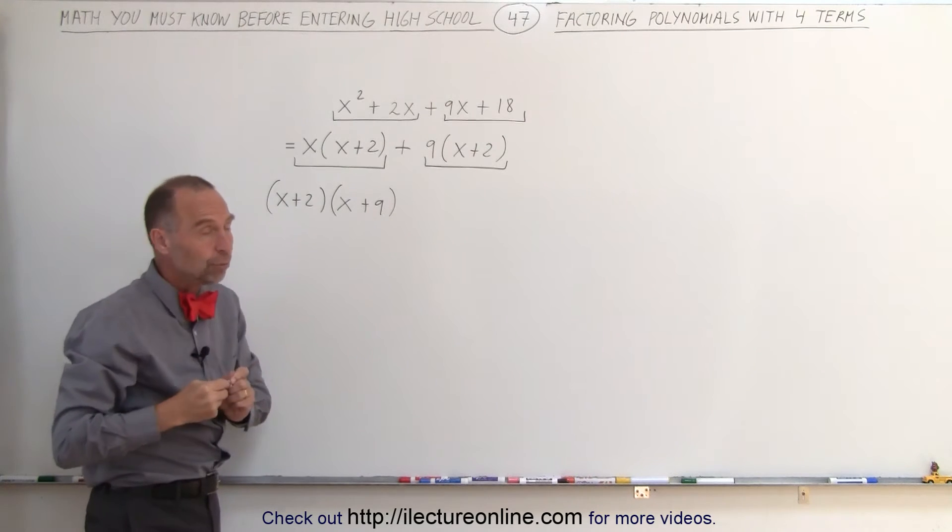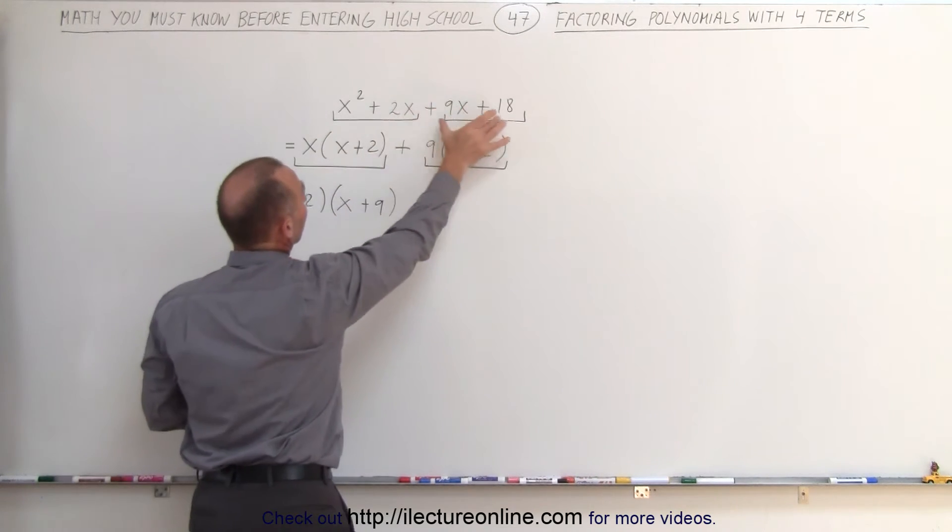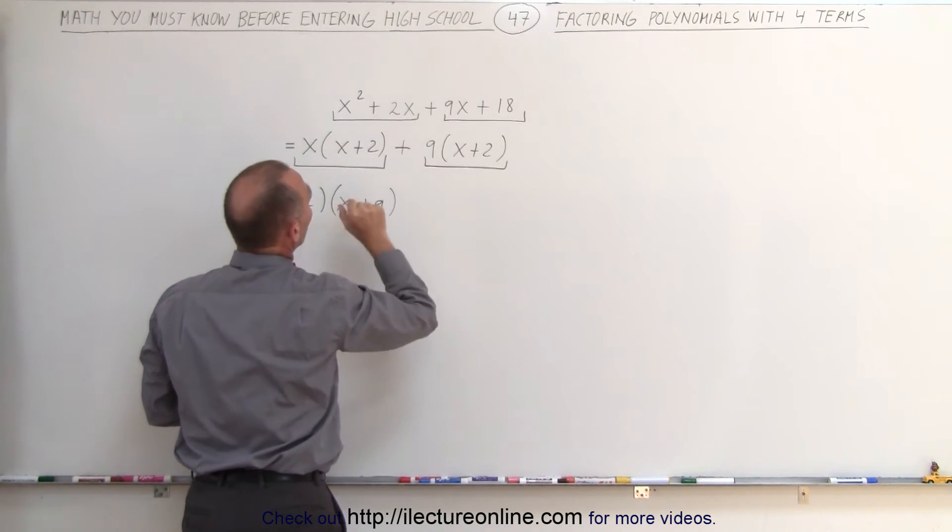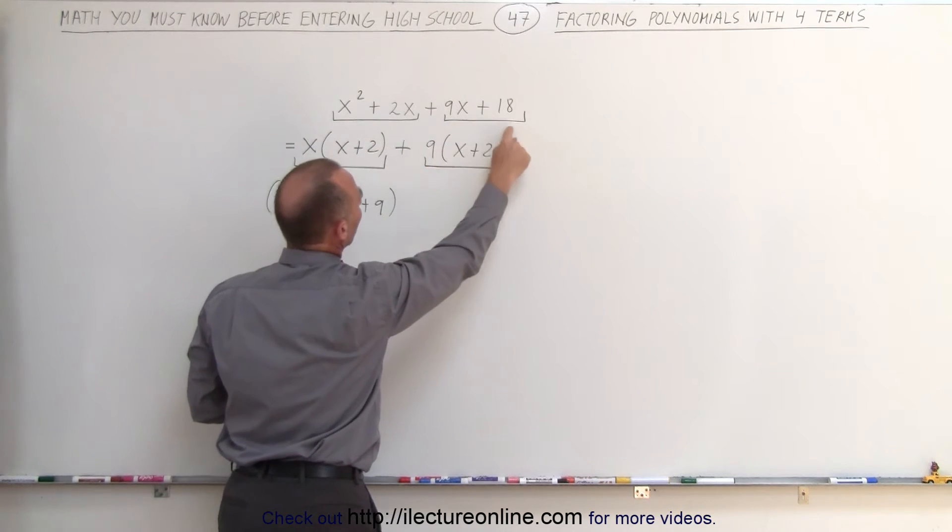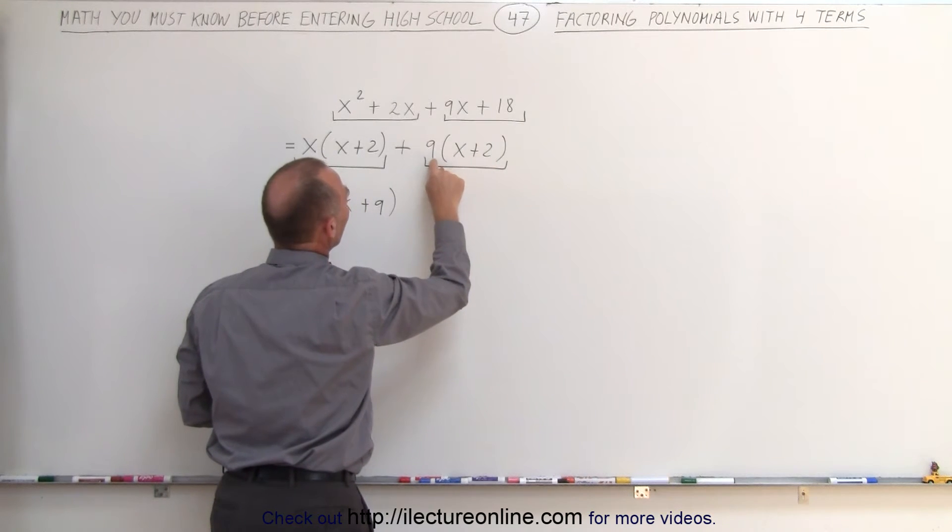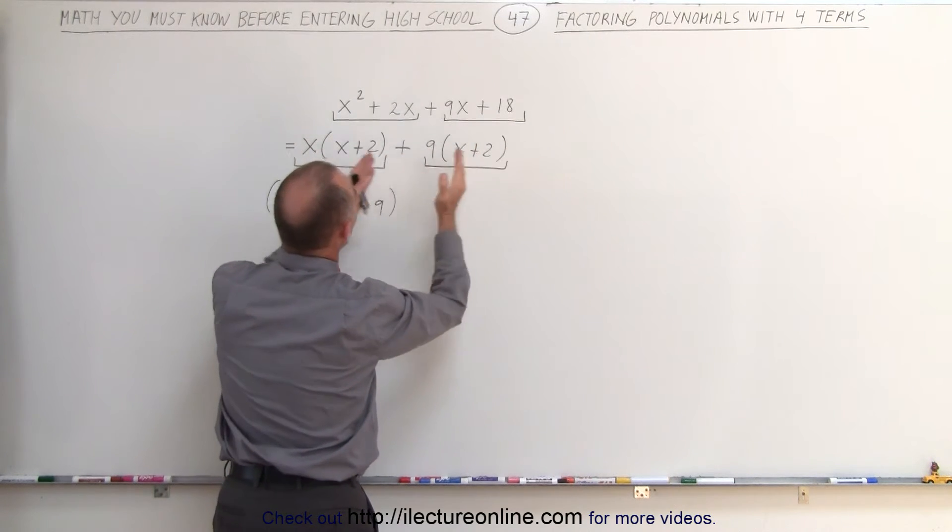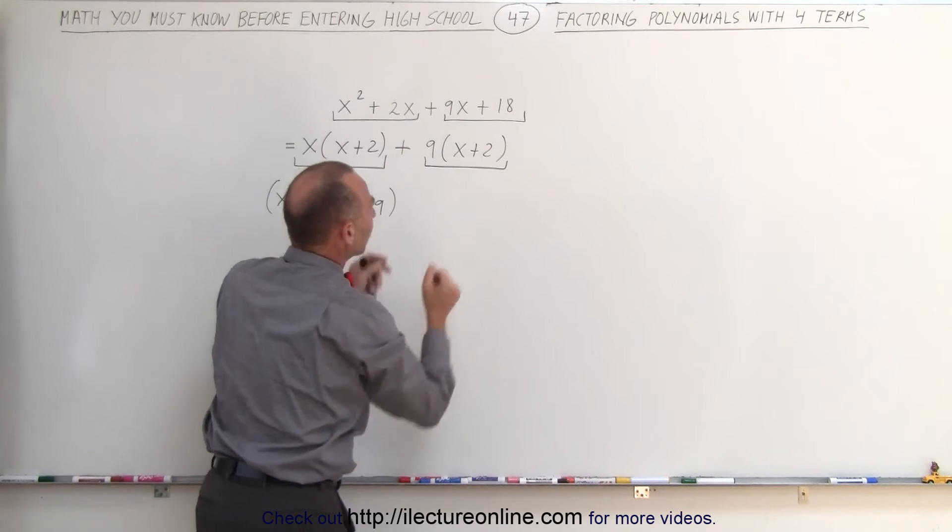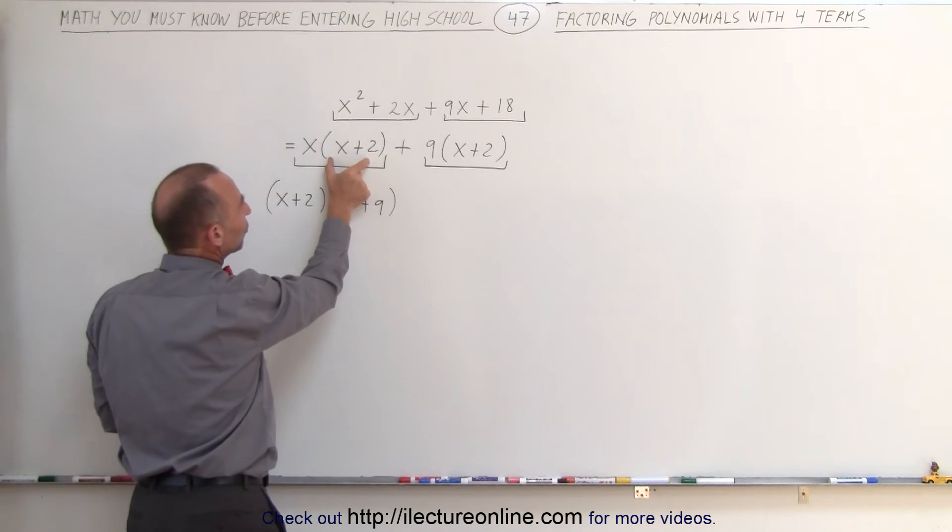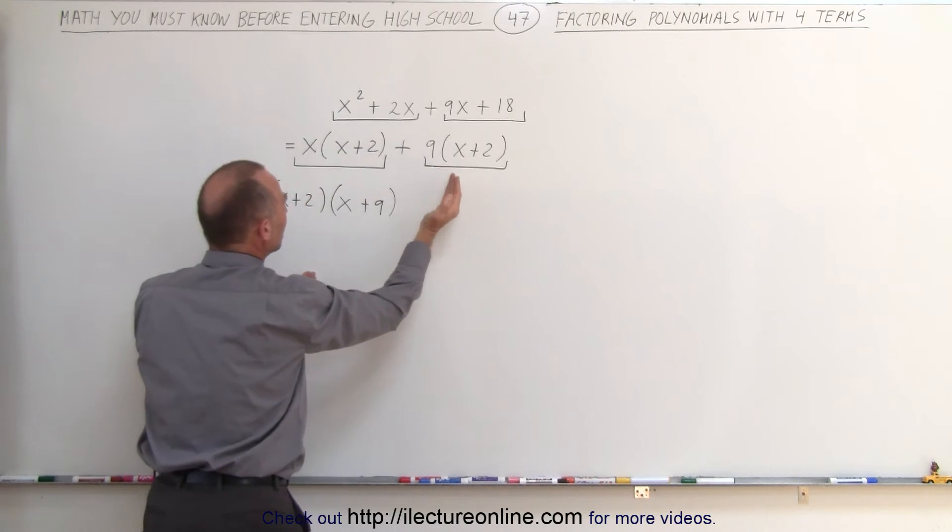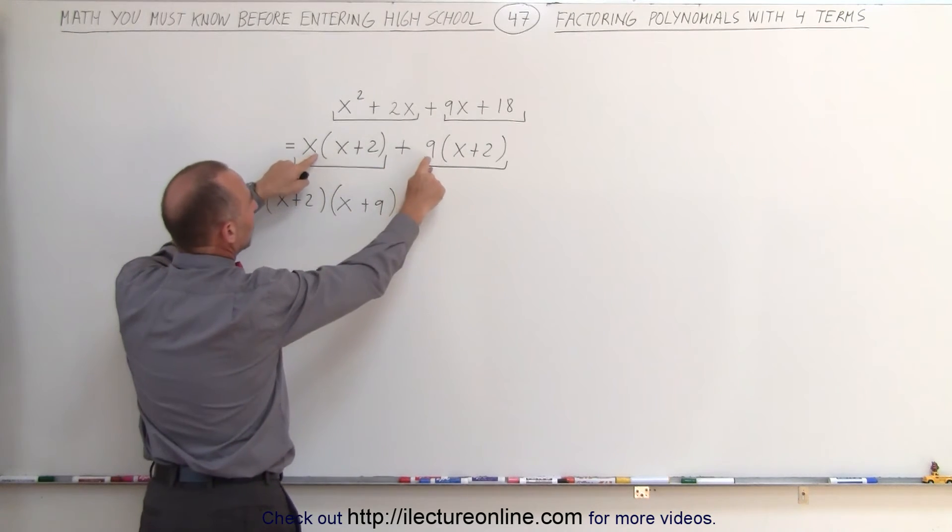Notice again what we do is we first group them together in groups of 2. We see what's common out of the first group and here we can see that x is common. We see what's common out of the second group. We see that 9 is common and then when we look at these as follows, we put little brackets underneath it again to make it more visual. We realize that x plus 2 is common to x plus 2 over here, which means it can be factored out and we're left with an x plus 9.